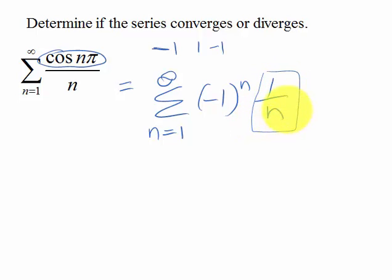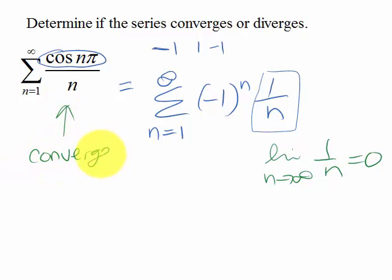And we also need the limit as n goes to infinity of this to equal 0, and we see that it does. So by the alternating series test, this series converges.